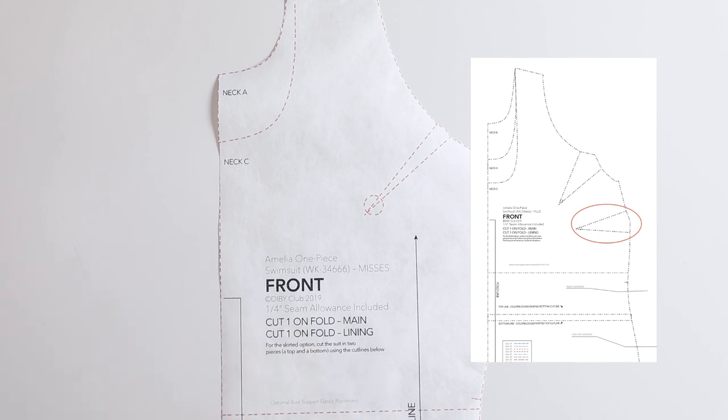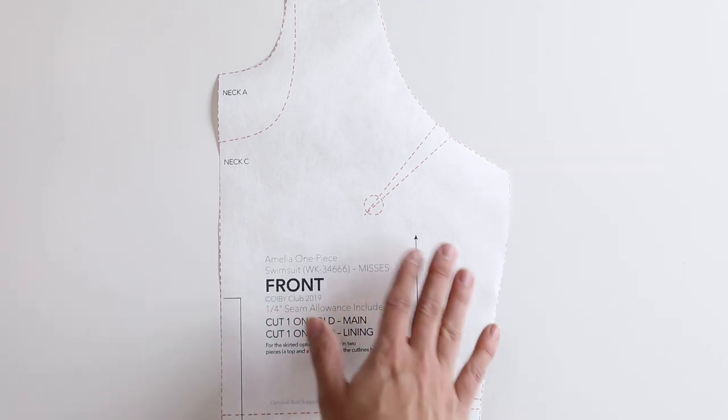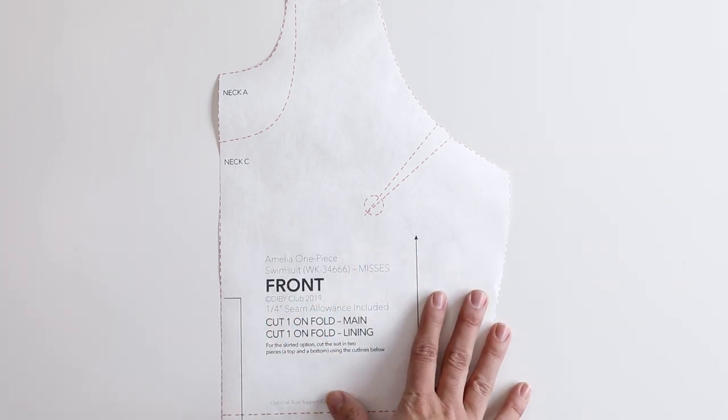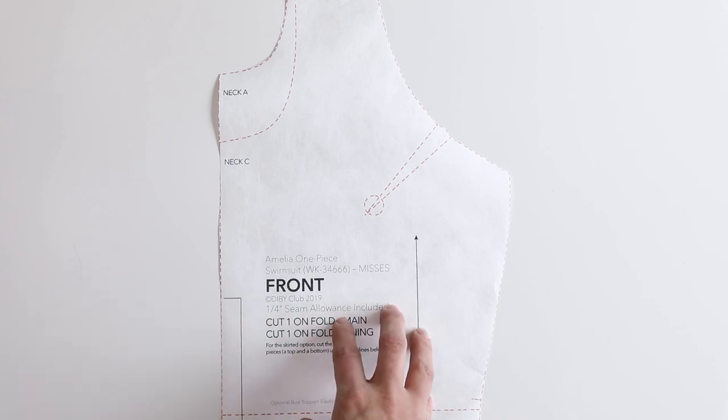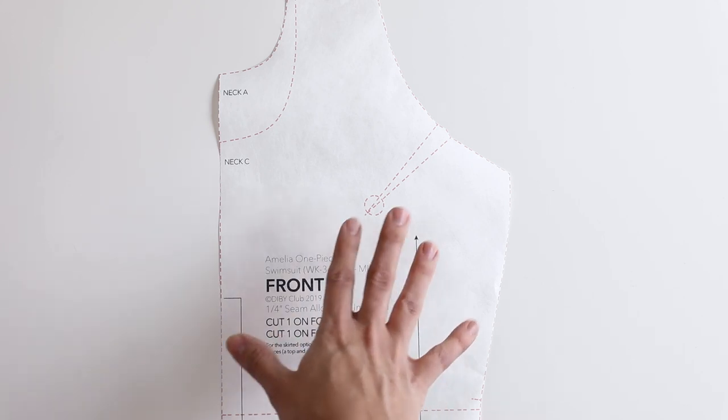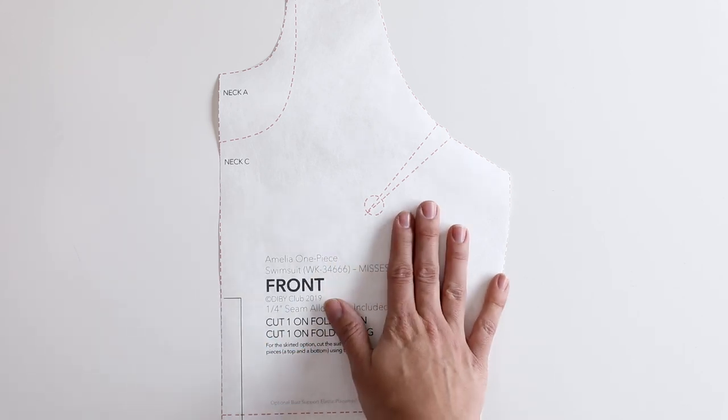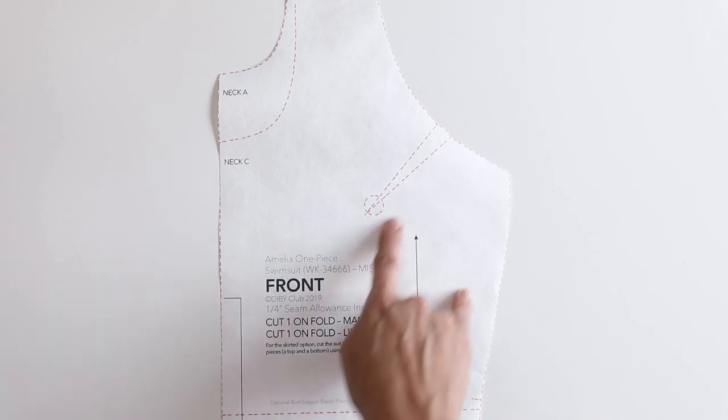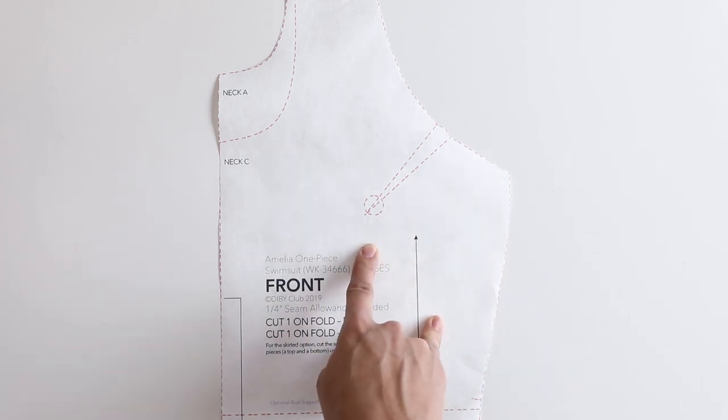So if you are not using a pattern with any darts at the bust then locate your apex by holding up your pattern piece to you and marking the fullest point of your bust. That will help you follow along with what we are doing because we will be using this dart to really locate the apex for this project.